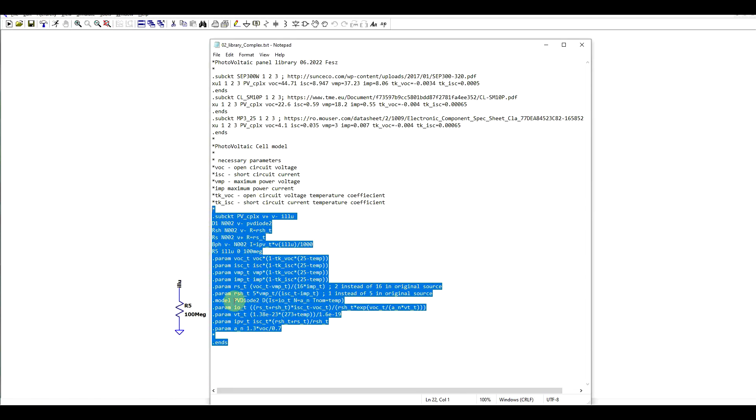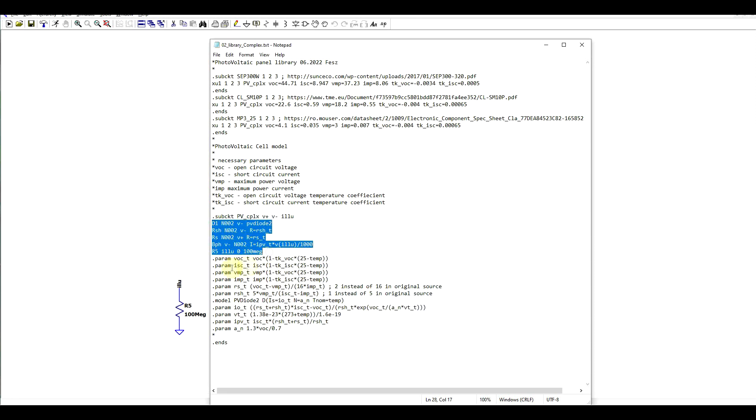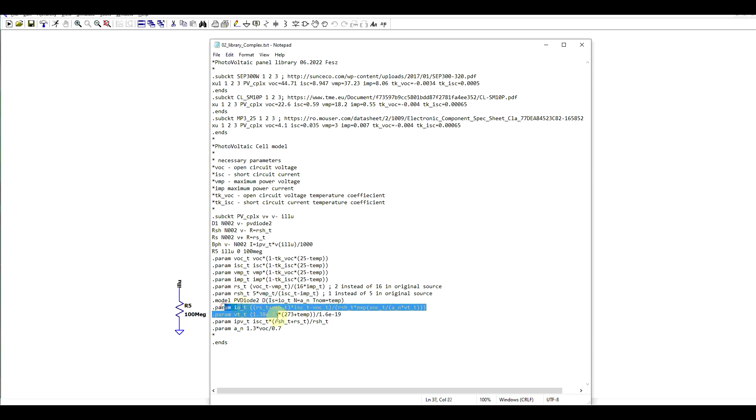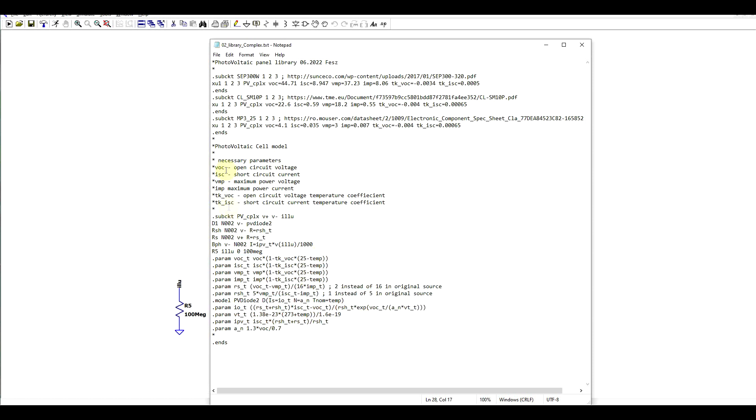So I went ahead and copied them into a text file. We have our model here on the bottom, this time I called it the photovoltaic complex model. It still has the same three inputs: V plus, V minus and illumination. We have the five components and then the various calculations needed for the parameters. I also included a definition of the necessary parameters needed so this sort of information is quite useful to have in a library file. Then I've taken three commercially available solar panels, left some links for their datasheets and extracted the various values that define their behavior.